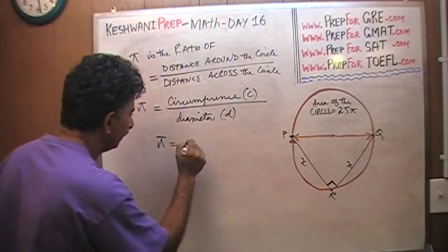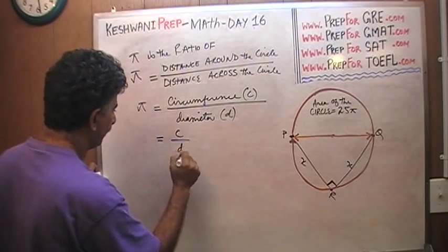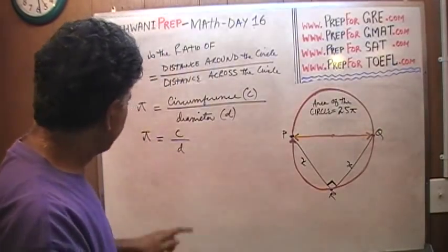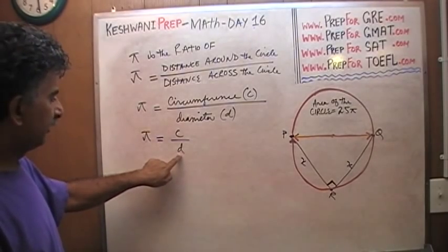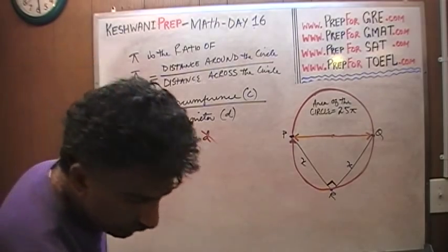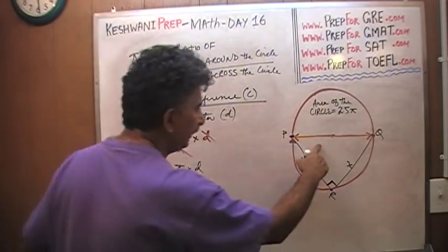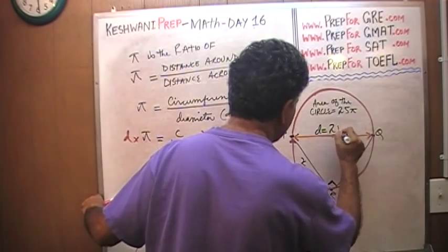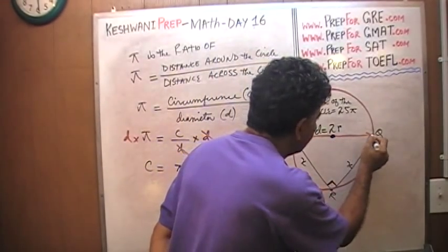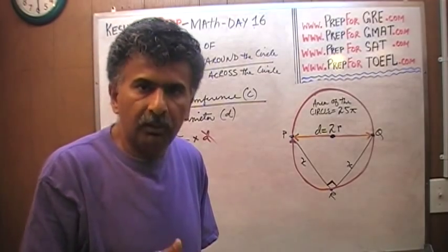One more time: pi equals circumference over diameter. Let's cross multiply — rather, let's get rid of the denominator. The only way we can get rid of the denominator is to multiply both sides by D. It cancels out, and therefore C equals pi times D. Now, what is D? D is diameter. D is simply twice the radius. The distance from P to Q we call diameter; the distance from the center of the circle to the other end we call radius — these are just terms we have agreed upon.